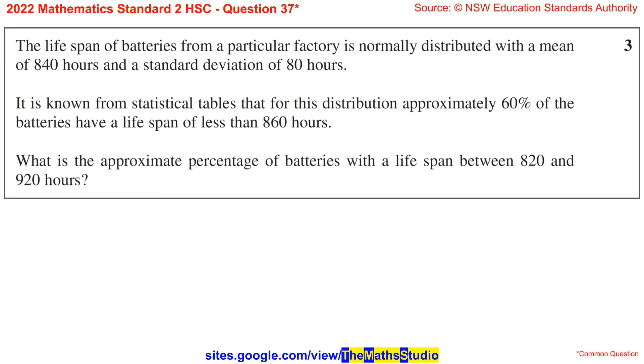It is known from statistical tables that for this distribution, approximately 60% of the batteries have a lifespan of less than 860 hours. What is the approximate percentage of batteries with a lifespan between 820 and 920 hours?